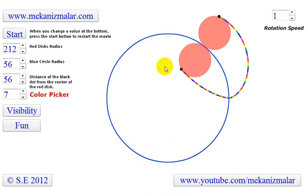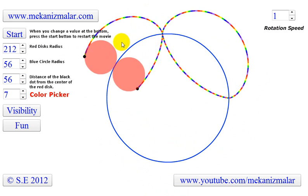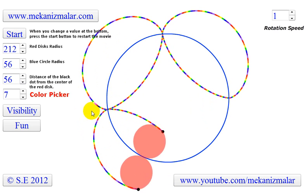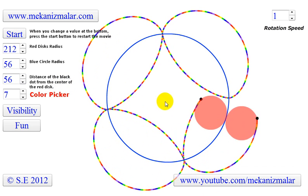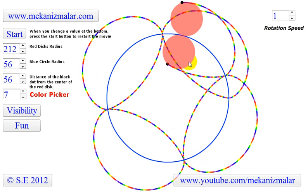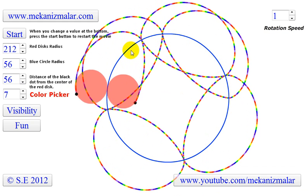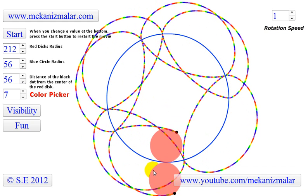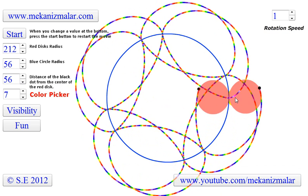Each red disk has a black dot attached to it. Those dots create plane curves. The curve generated by the black dot attached to the inner red disk is called a hypocycloid, and the other attached to the outer red disk is called an epitrochoid.